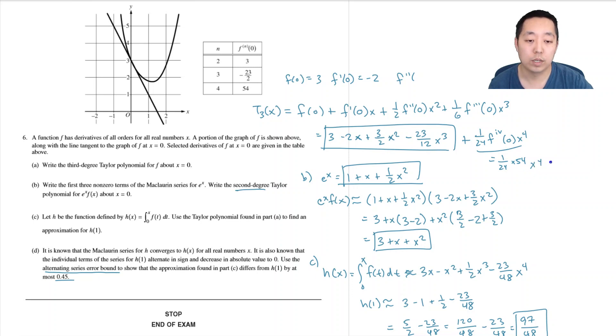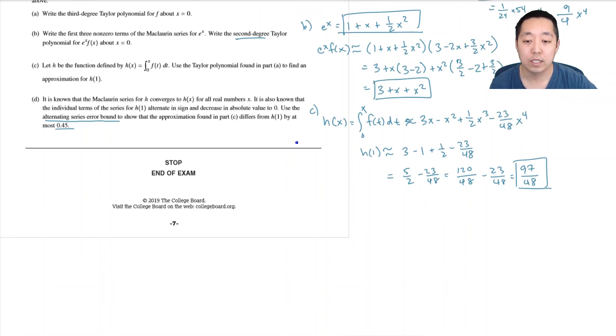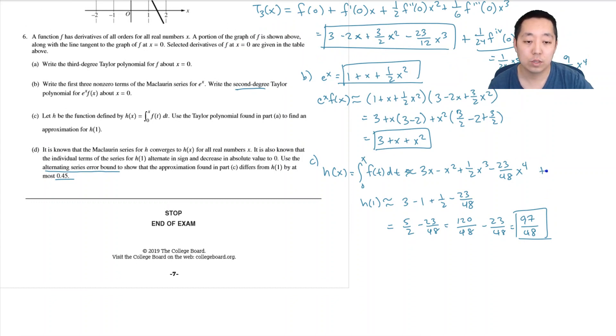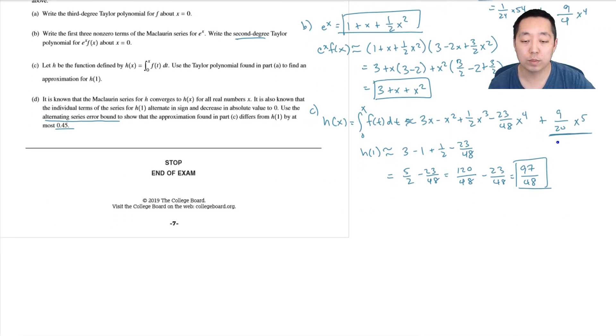To simplify that, dividing by six twice, this would be 9/4 x to the fourth. So the next term in my Taylor polynomial for f(x) would have had that, which means the next term in this series would have been the integral of that, which would have been 9 over 20 x to the fifth. So my error bound is less than or equal to the absolute value of the next term, which is 9/20 times 1 to the fifth, and that's equal to 9/20, which equals 45 over 100, which equals 0.45.